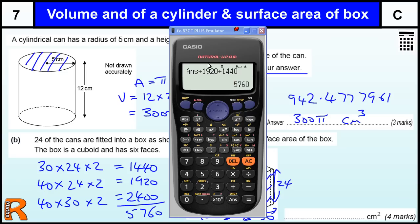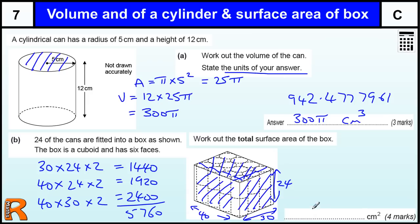5760. So that is our surface area for four marks. Thanks.